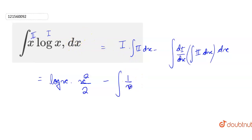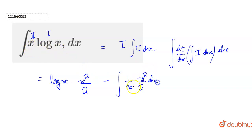1/x into integration of the second function. What is integration of x²/2? It is x²/2. So we have x²/2 dx. Here, x and x cancel.